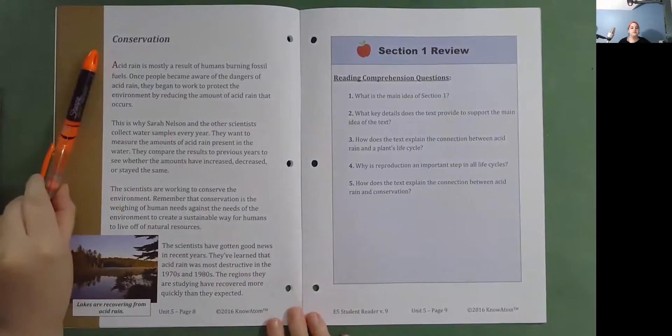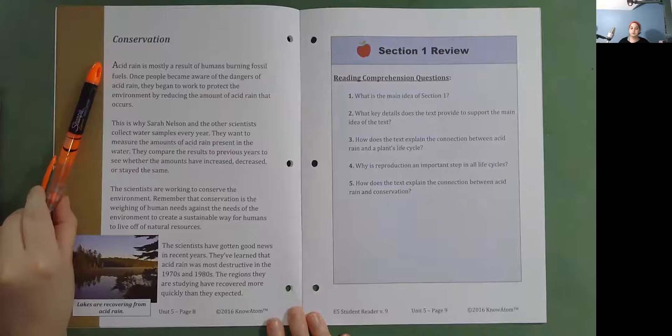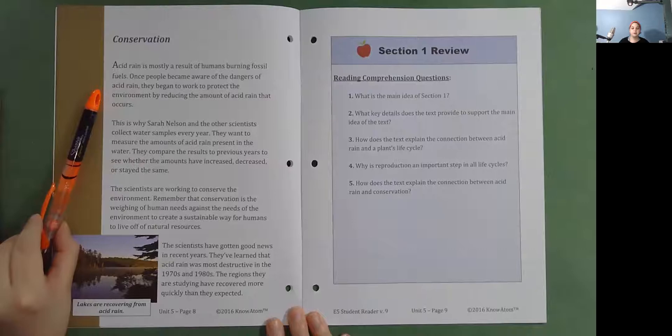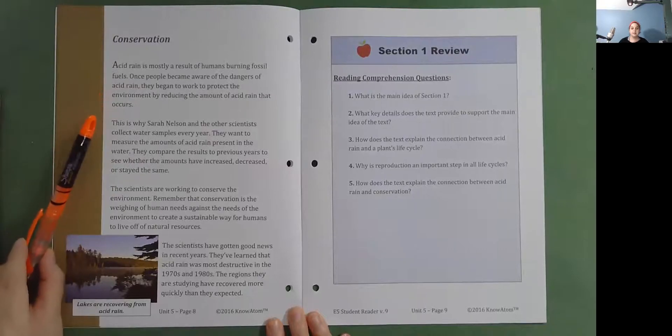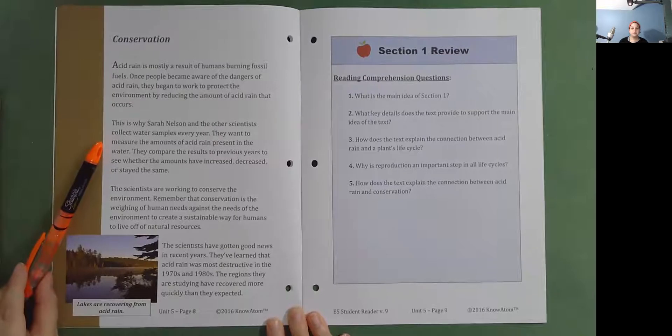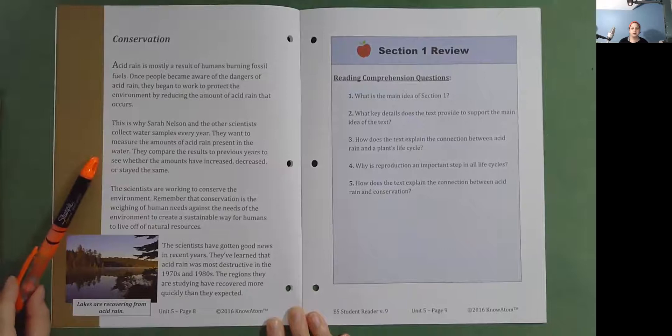Conservation. Acid rain is mostly a result of humans burning fossil fuels. Once people became aware of the dangers of acid rain, they began to work to protect the environment by reducing the amount of acid rain that occurs. This is why Sarah Nelson and the other scientists collect water samples every year. They want to measure the amounts of acid rain present in the water. They compare the results to previous years to see whether the amounts have increased, decreased, or stayed the same.